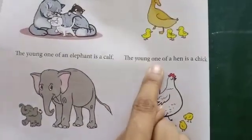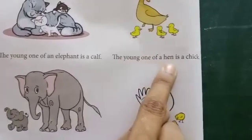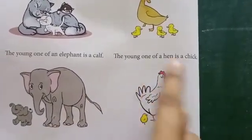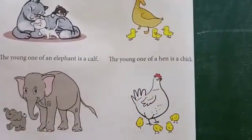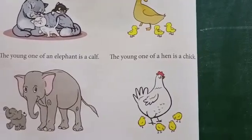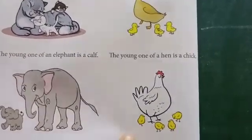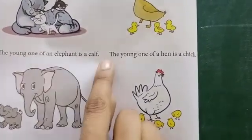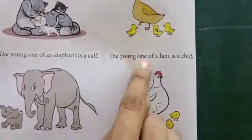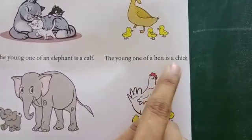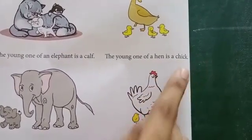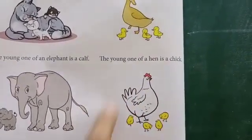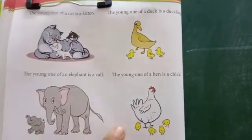The young one of a hen is a chick. Yahaan pe konsa animal hai? This is a hen. Okay? And their baby name is chick. So, the young one of a hen is a chick.